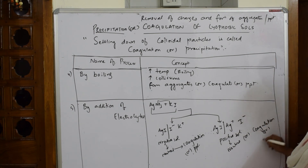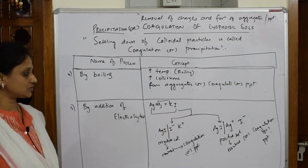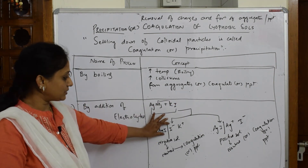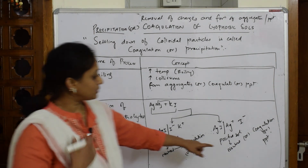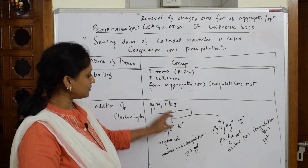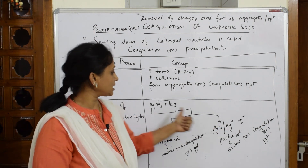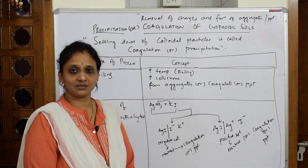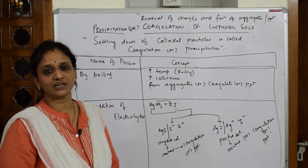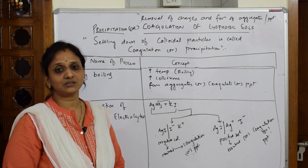Based on this concept we are going to learn the Hardy-Schulze rule. When excess of one ion is present, you get a negative ion if I minus attacks, or a positive ion if Ag plus attacks. The negative ion drags the oppositely charged cation from the medium; the positive ion drags the opposite charged iodide (I minus) from the medium, and finally they coagulate or precipitate. These are the different methods for coagulation of lyophobic colloids.